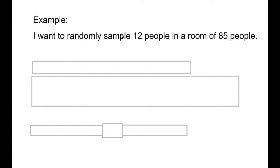For example, I want to randomly sample 12 people in a room of 85. Well, if I want to get 12 people in my sample, I need to figure out should I count every 20th person, every 11th person, and so forth.